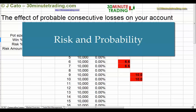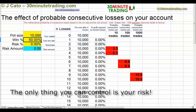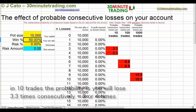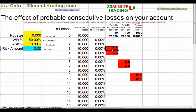Let's talk about some simple facts about probability when you're trading. The only thing you can control is your risk. If you were winning 50% of the time and losing 50% of the time, in 10 trades you will lose 3.3 times in a row — that's this number here — clearly that means three times or four times in a row.